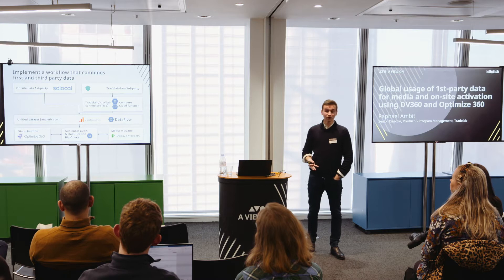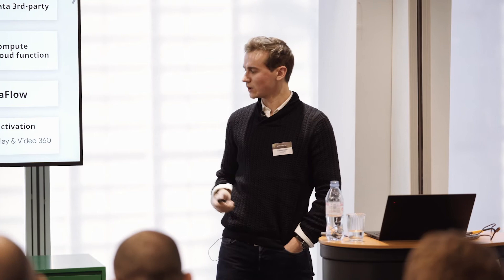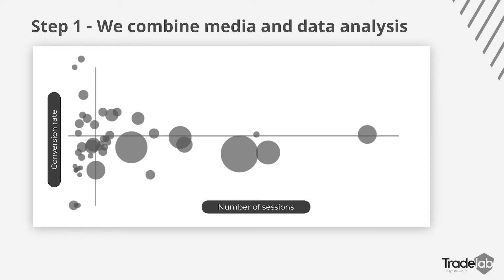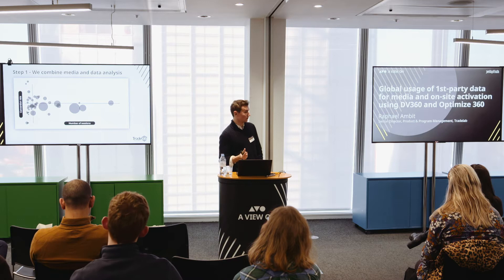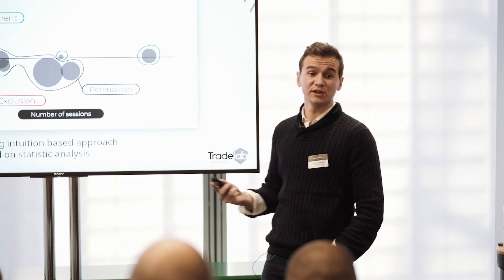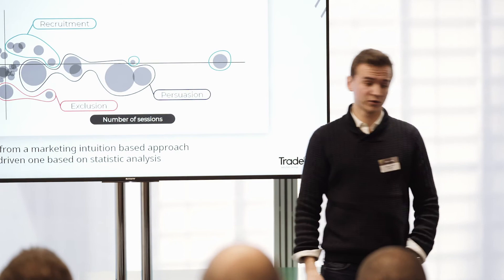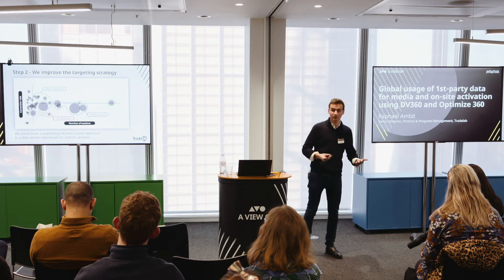Once we got there, the idea was to push that directly into DV360 for media activation and into Optimize 360 to change the landing page depending on the signals we could get. Regarding the dataset itself, we accessed it by exposing the Google Analytics API and pulling all data in aggregated form — we didn't need log-level data here. We created clusters depending on different user profiles and what they do on the website. The x-axis represents the number of sessions — basically the reach — and the y-axis represents the conversion rate.